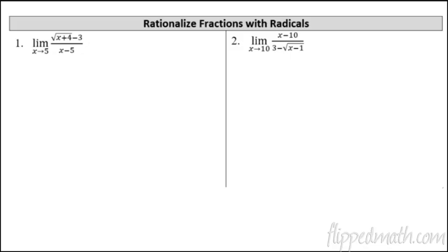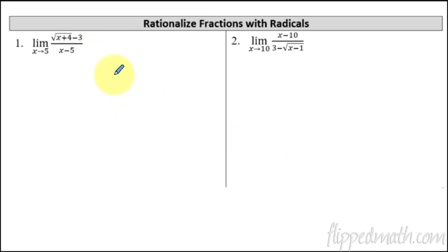So let's start off with how to rationalize. Remember, first we just try direct substitution. If we were to take this limit as x approaches 5 and just plug it into the x, you'd end up with 0 over 0. So that's not going to work. That's indeterminate form, which we'll talk about later in the year — how to have a special way to deal with those.